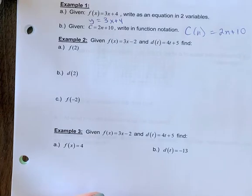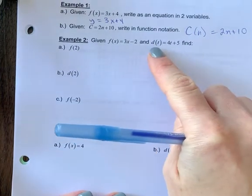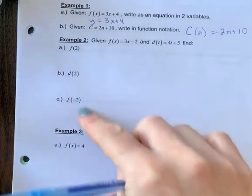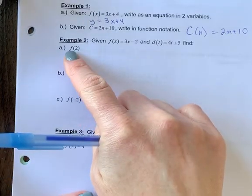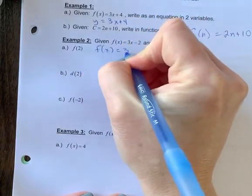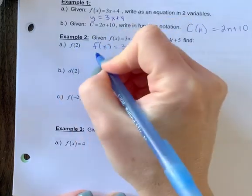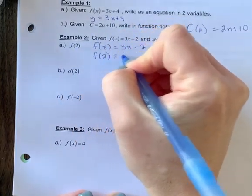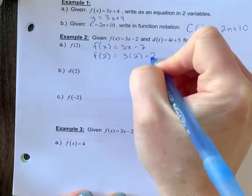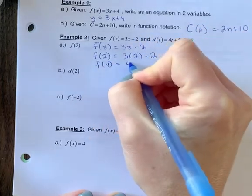Let's look at example 2. We're given f of x equals 3x minus 2 and d of t equals 4t plus 5. Find each of the following. So if I have an f here, that means I'm using the f of x equation. And every time I see an x, now I'm going to write a 2. So we're going to find f of 2 equals 3 times 2 minus 2. So we're going to evaluate that. So f of 2 equals 6 minus 2 or 4.